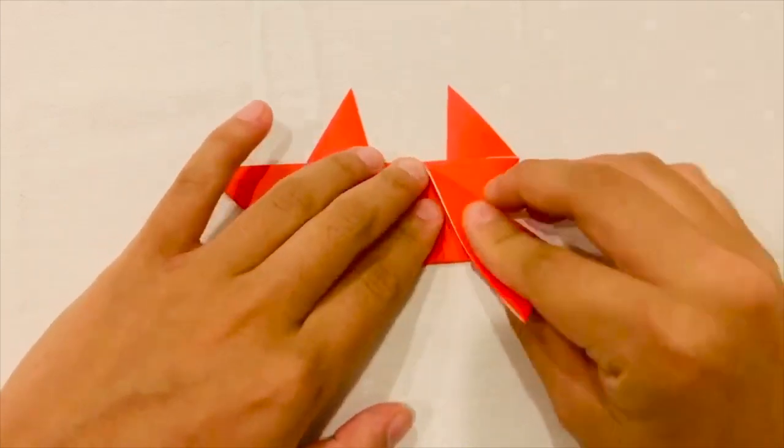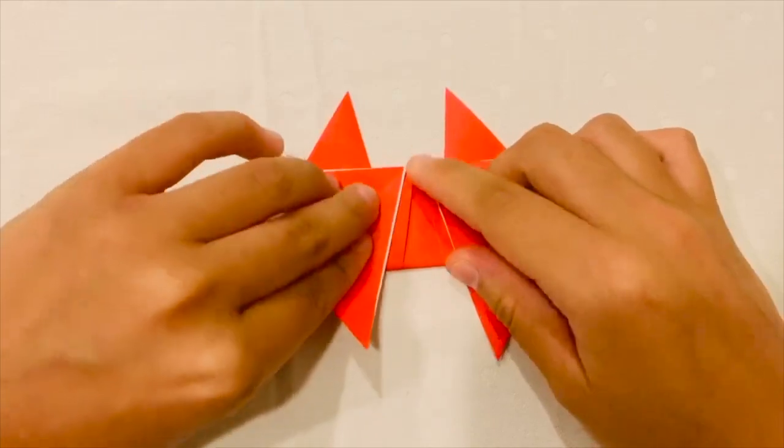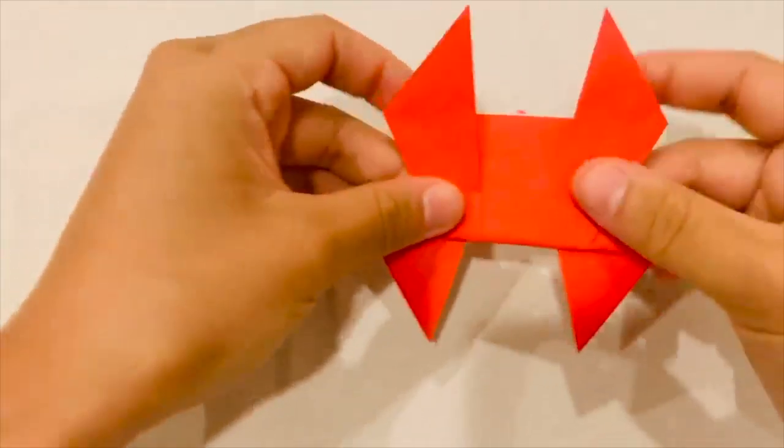Lastly, you're going to fold that bottom tip of the triangle downward, just like you did with the arms. And you're going to repeat on the opposite side. And there you go. That's your super easy origami crab.